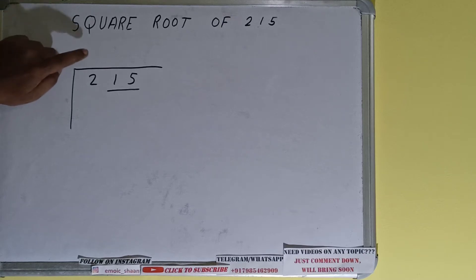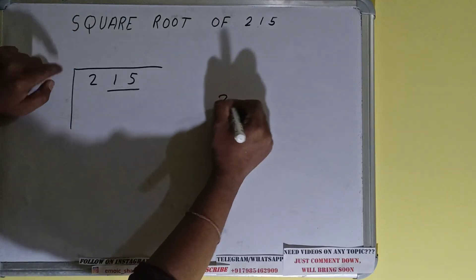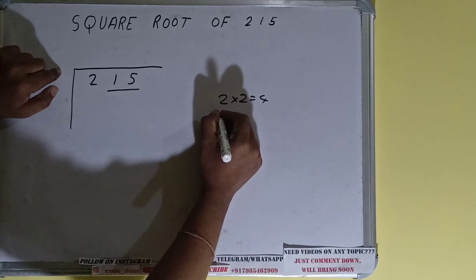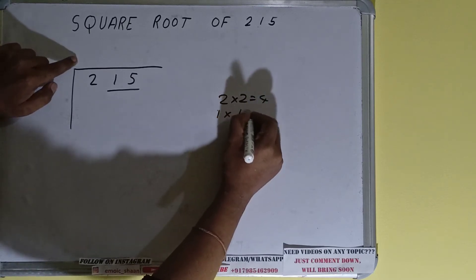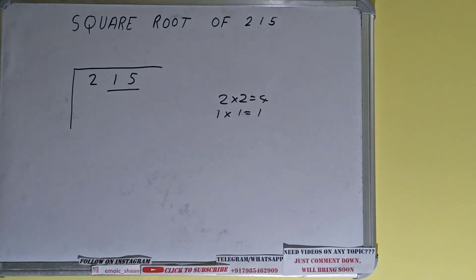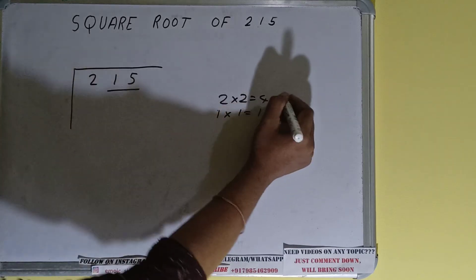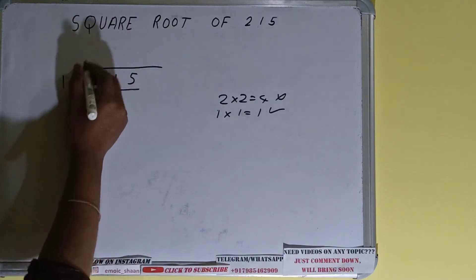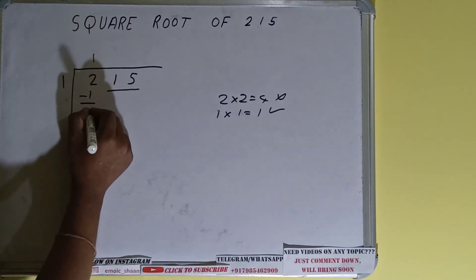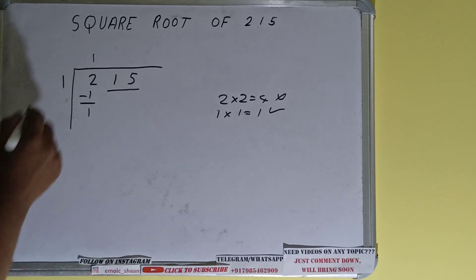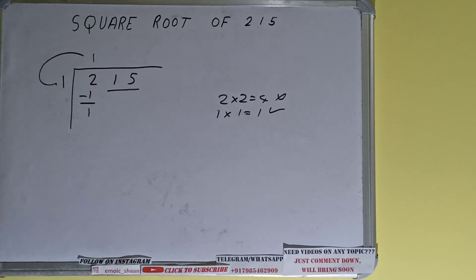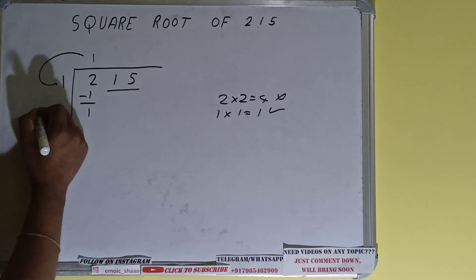So if we write two here and two here it will give four. If we write one here and one here it will give one. Four we cannot use because four is greater than two, so we have to go with one. One here and one here will give one. Subtract, it will be one. Now whatever is your divisor added with what you multiplied with - we did 1×1 right - so do 1+1, it will be two, write it over here and keep one digit extra over here.